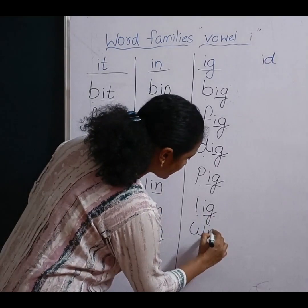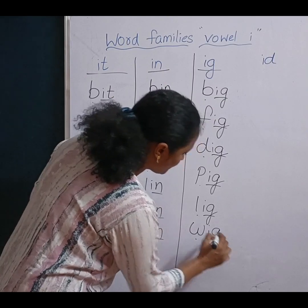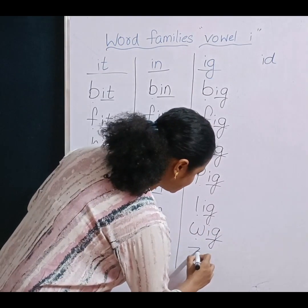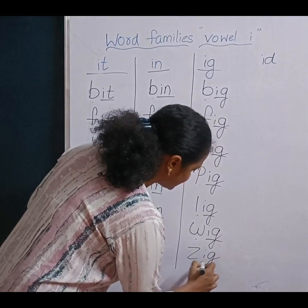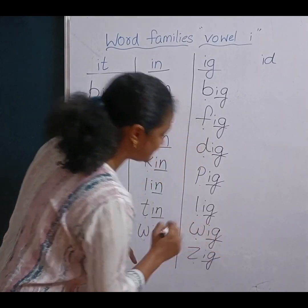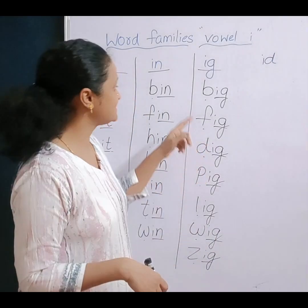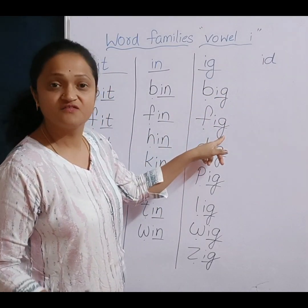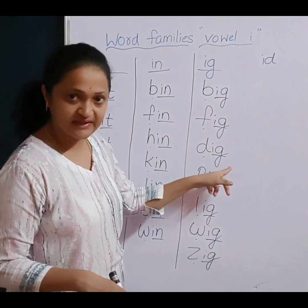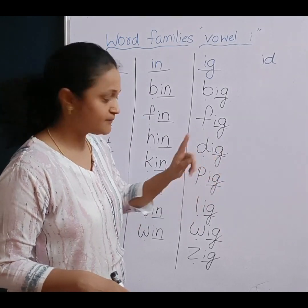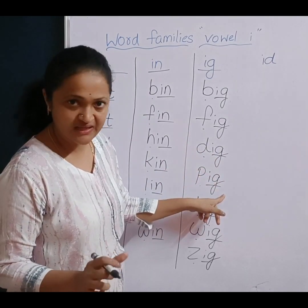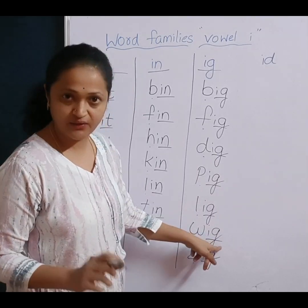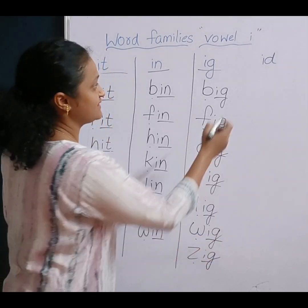W, ig. Win. W, ig. W, ig. Z, ig. Now revise: B-ig Big, F-ig Fig, D-ig Dig, P-ig Pig, L-ig Lig, W-ig Wig.